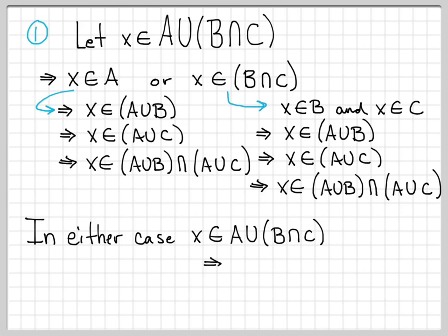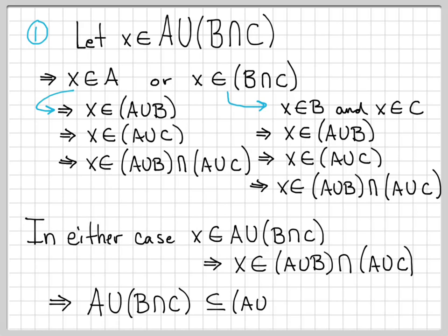So in either case, X ends up in this set. What we've done is established that A union B intersect C is a subset of A union B intersect A union C, because we let X be an arbitrary element of the left-hand set and showed that no matter what, it will also be an element of the right-hand set. That's exactly the definition of a subset.